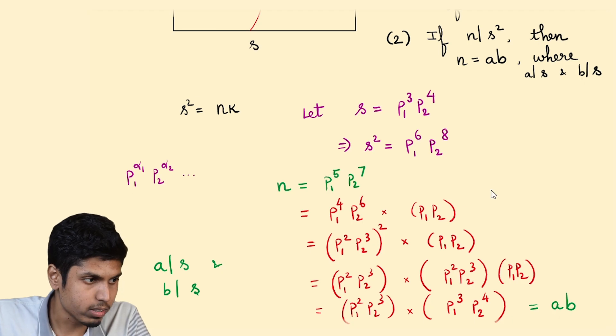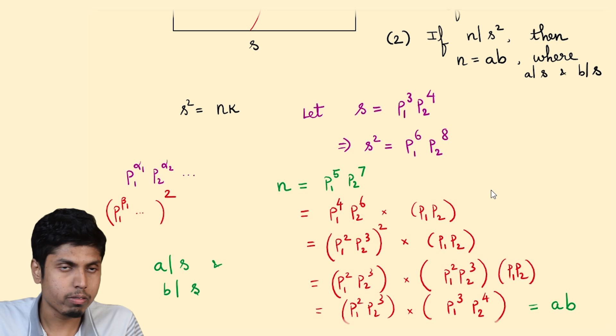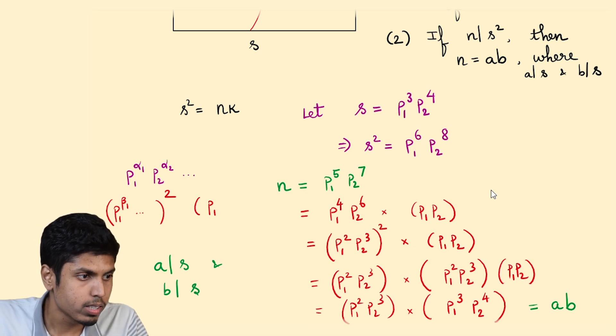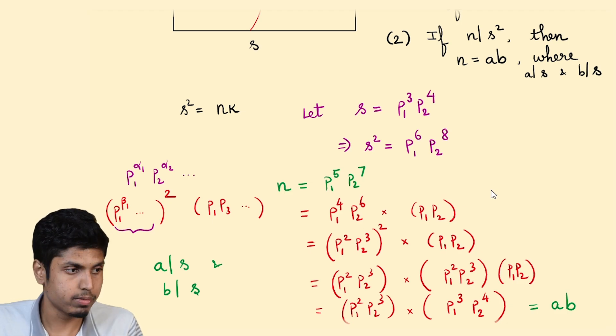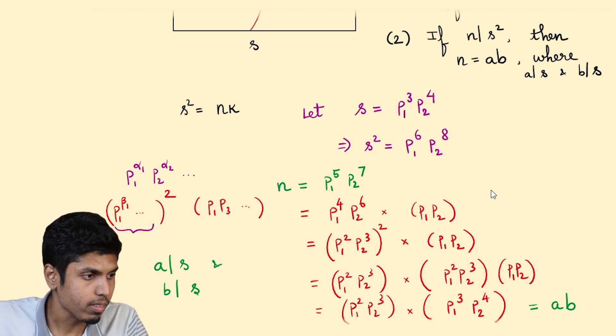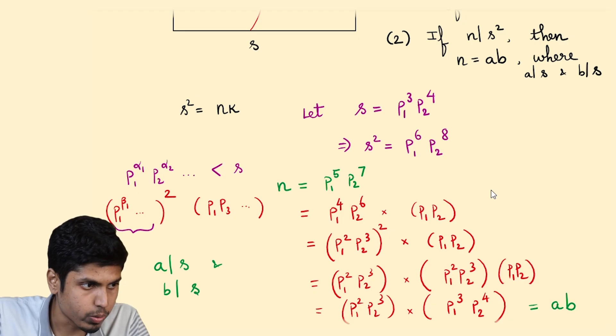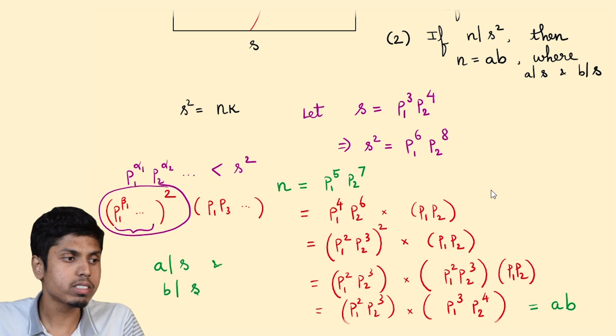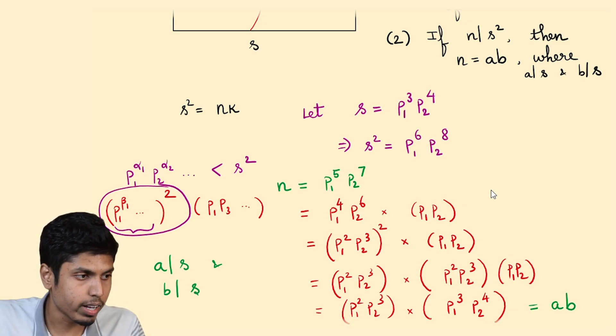So after doing this segregation, we get P₁ power beta 1 and all the way till the last prime's exponent value, the whole squared, times some collection of primes, say P₁, P₃ and so on. Clearly this is going to be less than S. The reason is that this entire value is less than S squared. Now you are considering this separately, which is clearly less than S squared, and this value will be less than S.